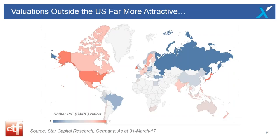Looking at the Schiller PE ratio — cyclically adjusted PE ratios based on average earnings over 10 years — the red areas indicate relatively high valuations at around 24 PE, while the blue areas, including Russia and big parts of emerging markets, show below-10 forward PE. Emerging markets are far more attractive from a valuation perspective than developed markets. Looking at individual countries, the current black-line valuations for Brazil, China, India, and Russia are all quite well below their long-term averages — further confirmation of good opportunities in those emerging markets.